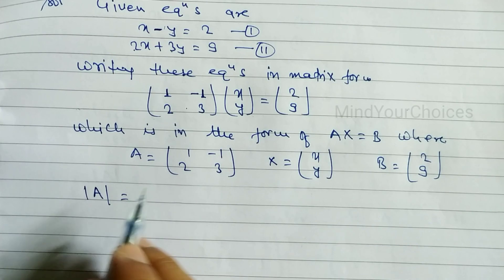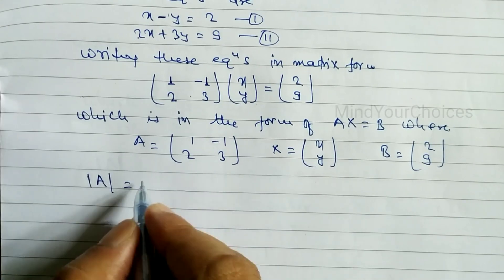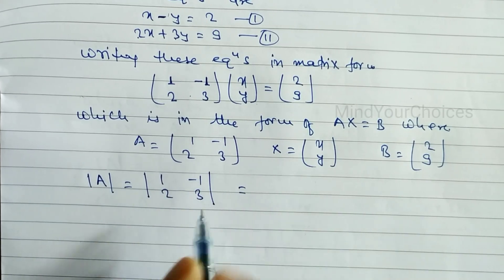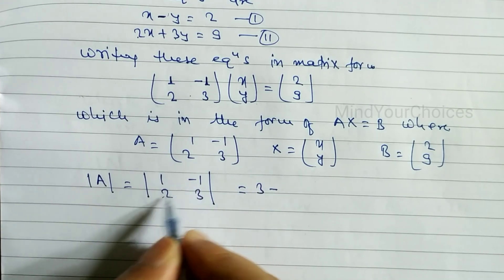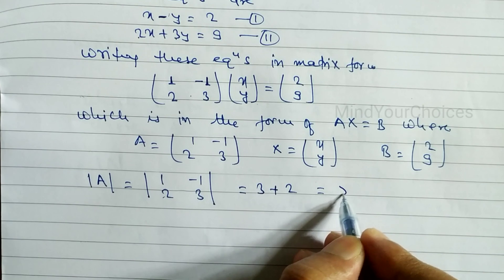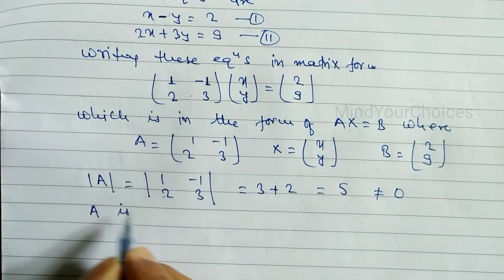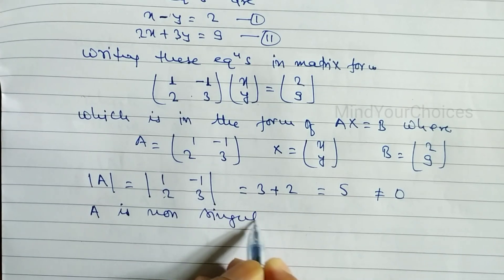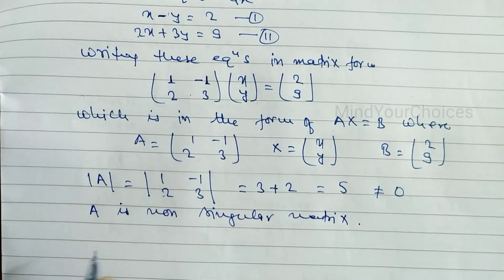Next we have to find the determinant of A to check whether it is singular or non-singular. The determinant is one times three minus two times minus one, which gives three plus two equals five. Since this is not equal to zero, A is a non-singular matrix, so we can find A inverse.